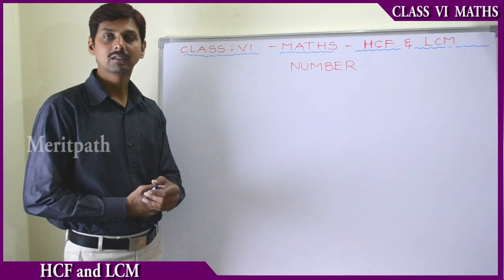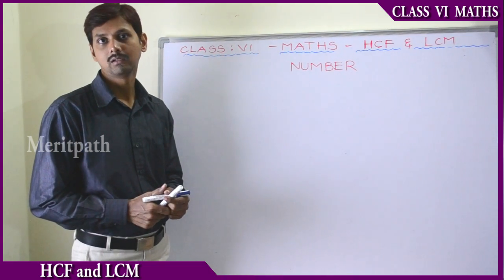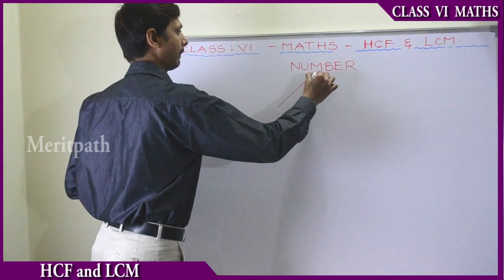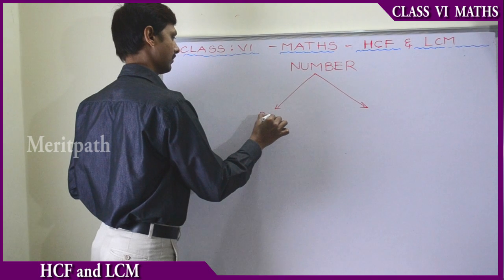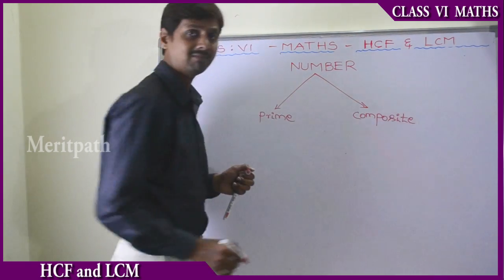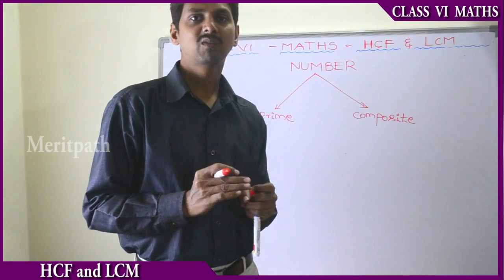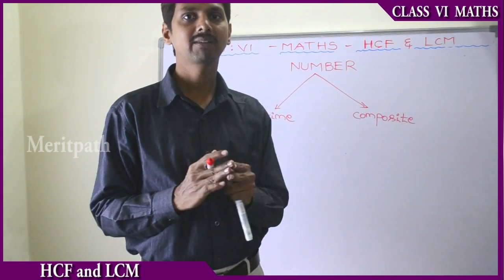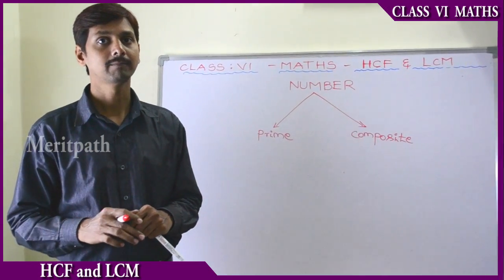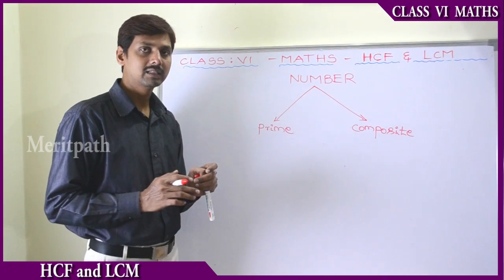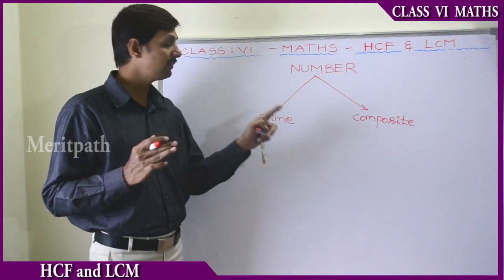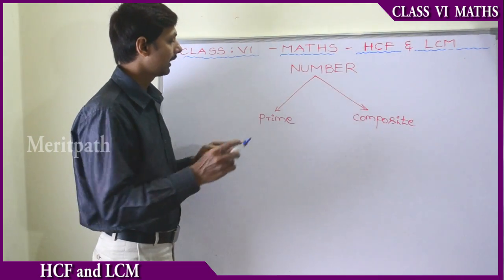In the previous class we learnt about even numbers and odd numbers. Let's now learn about prime and composite numbers. Just as we divided numbers into even and odd, we can also divide numbers into prime and composite.